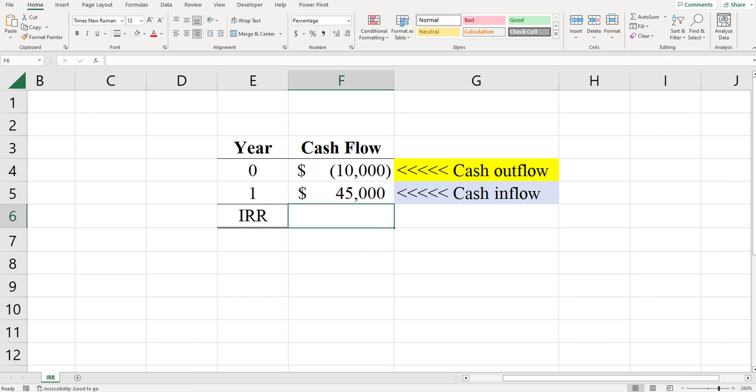If you wanted to verify this in Excel, you could verify this in Excel. And you see that I've got the cash outflow right here of 10,000. And then the single cash inflow of 45,000. You just want to verify that's correct. It's type equals IRR highlight the cash flows. And you see that the IRR of this project is 350%.